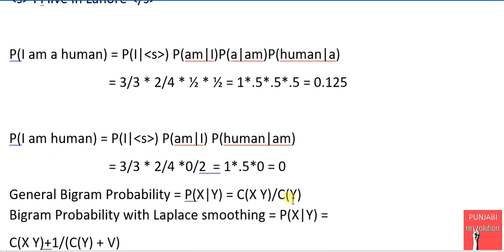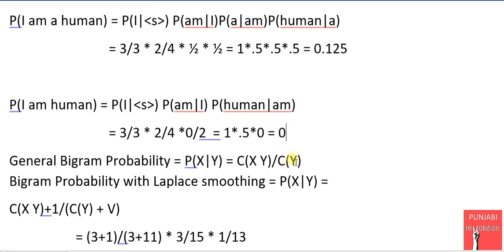So to fix this problem we have the algorithm of Laplacian smoothing. The algorithm of Laplacian smoothing is a very simple one. What does it do? It simply adds 1 to all the bigram counts in these probabilities. It will add 1 to the numerator. So 3 will become 4, 2 will become 3 and 0 will become 1. So there will be no 0 left in the numerators of these bigram probabilities.